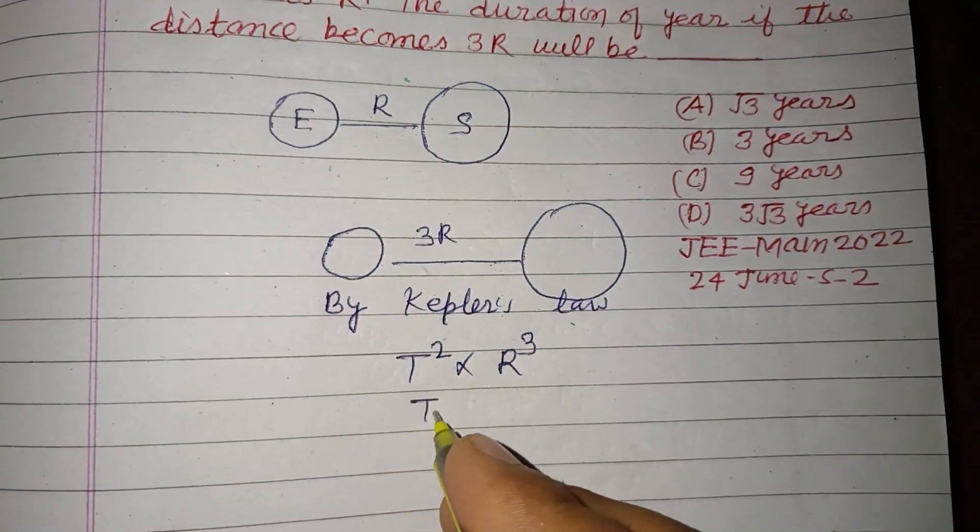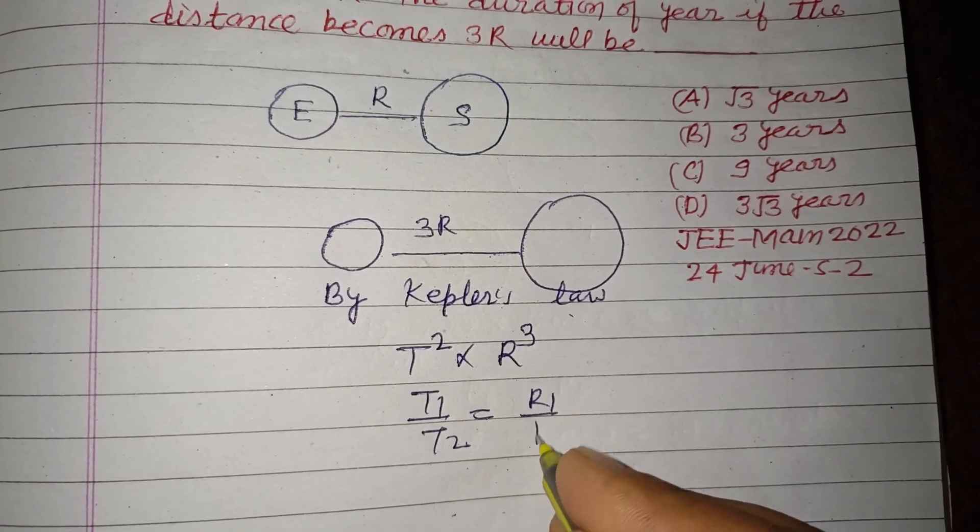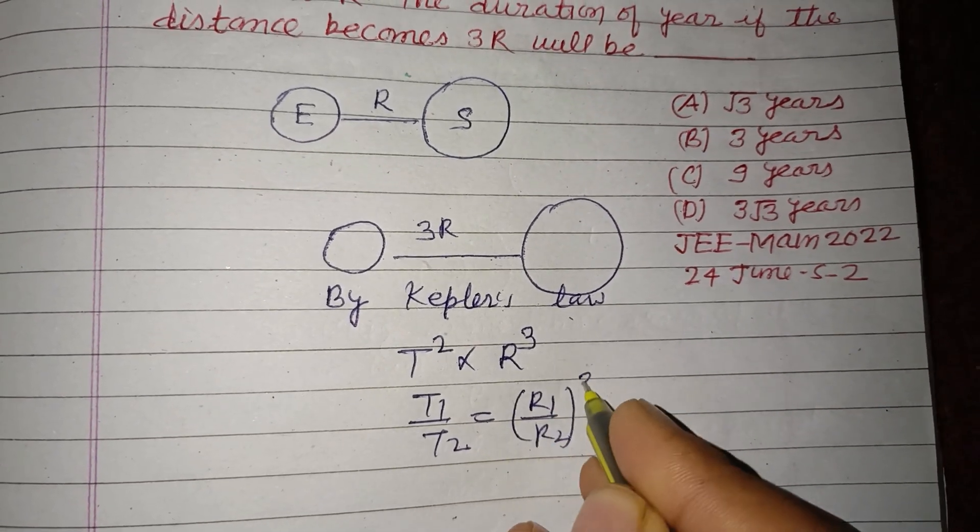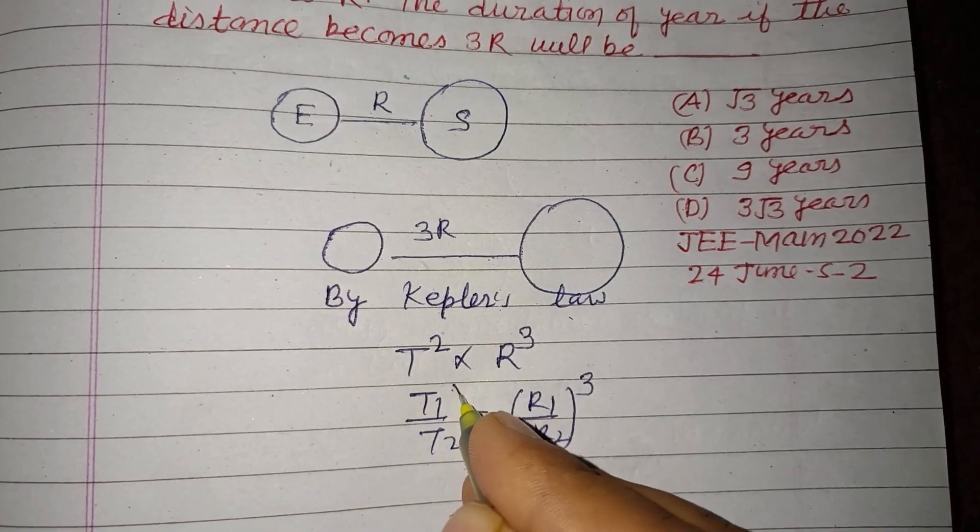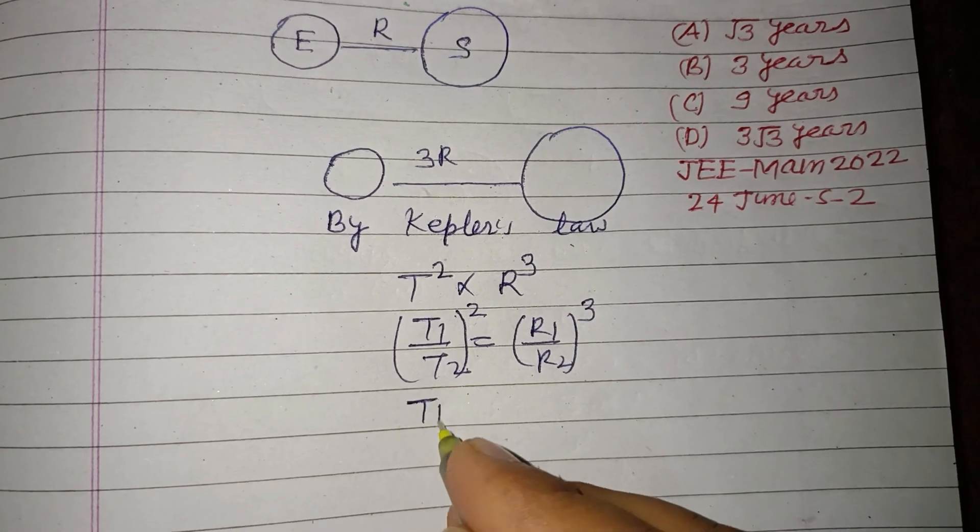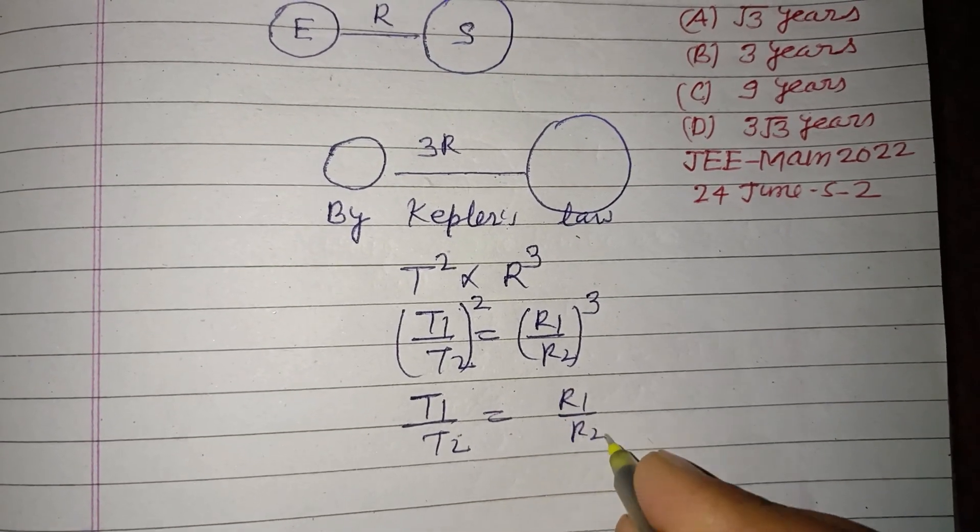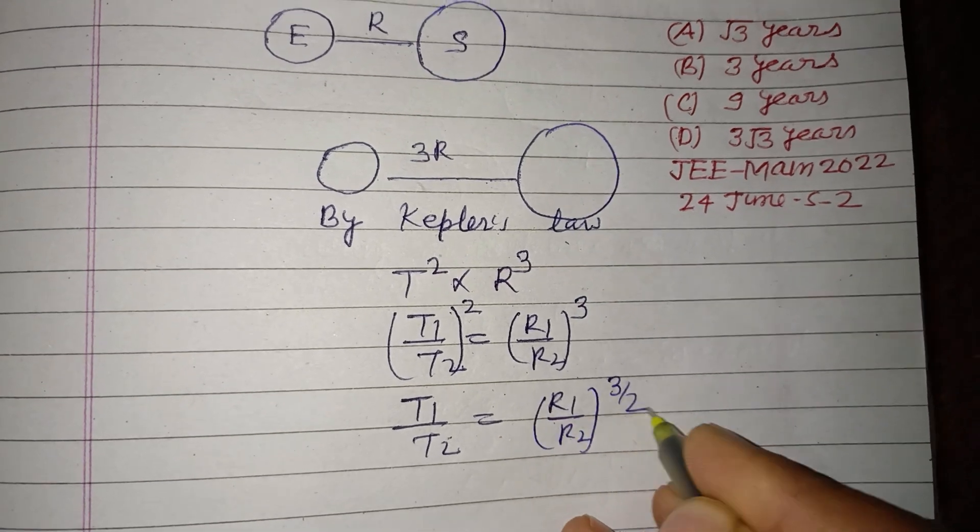So T1 upon T2 equals R1 upon R2 whole cube. T1 upon T2 whole square equals R1 upon R2 whole cube. Therefore, T1 upon T2 equals R1 upon R2 to the power 3/2.